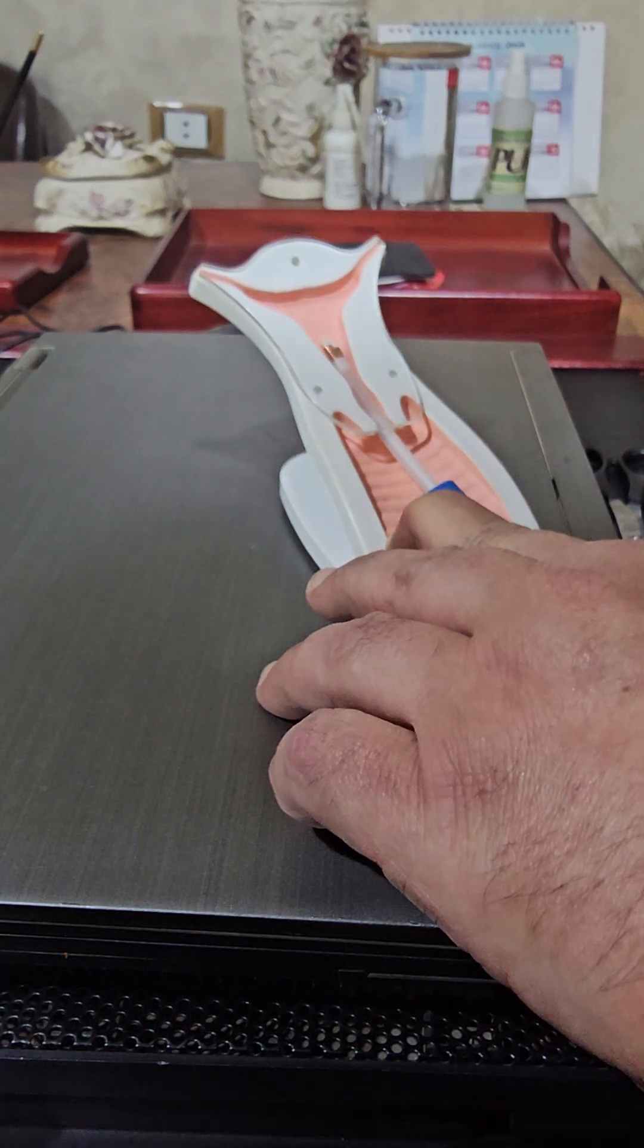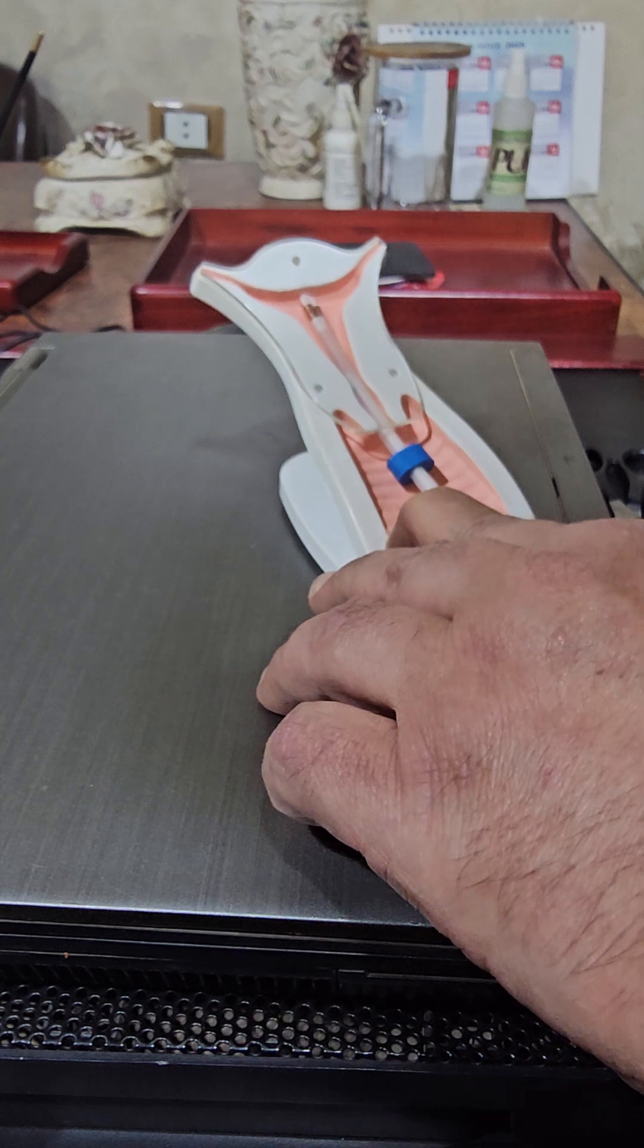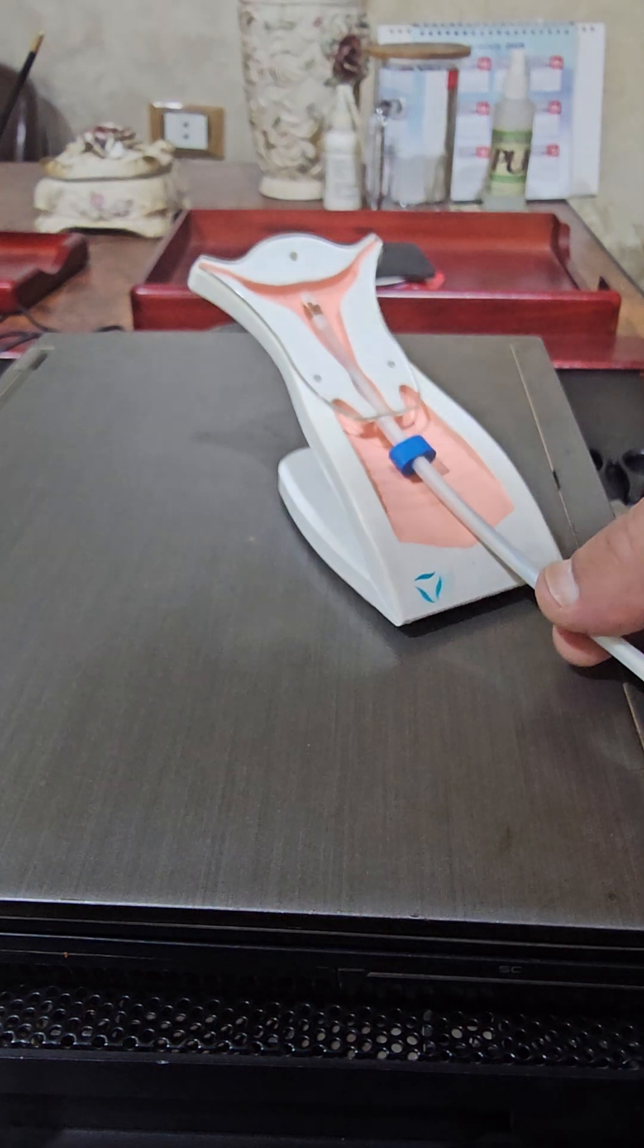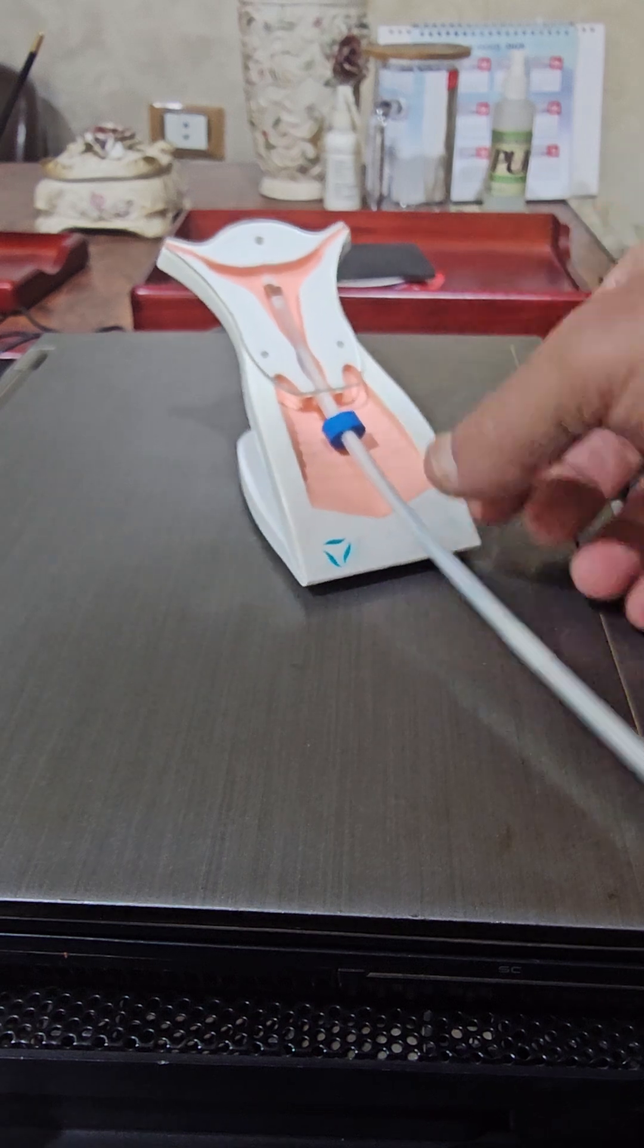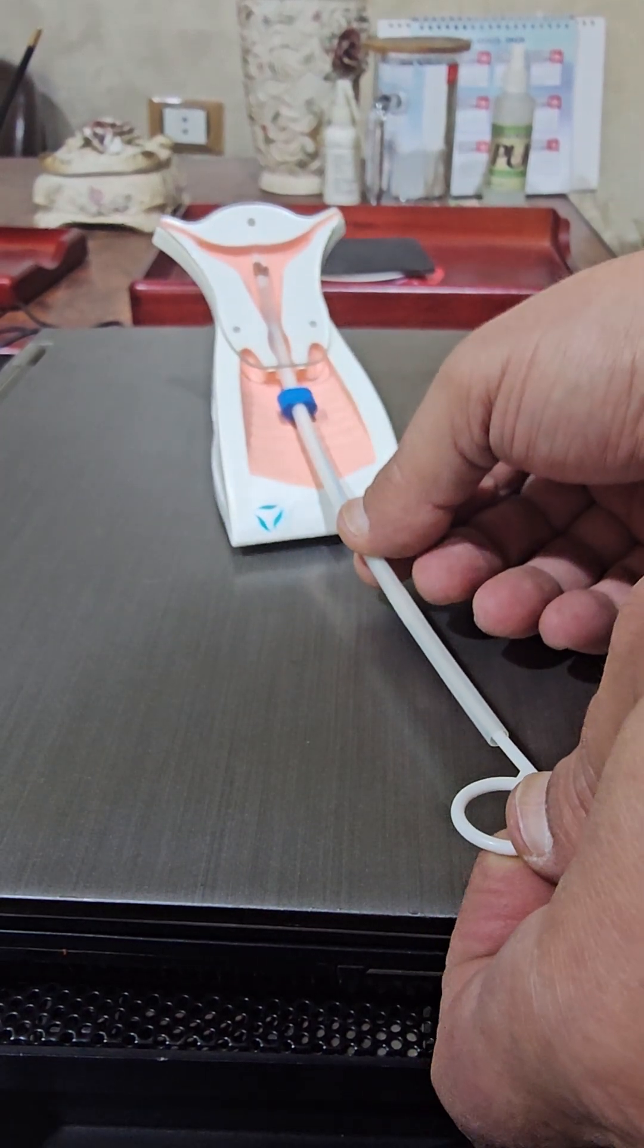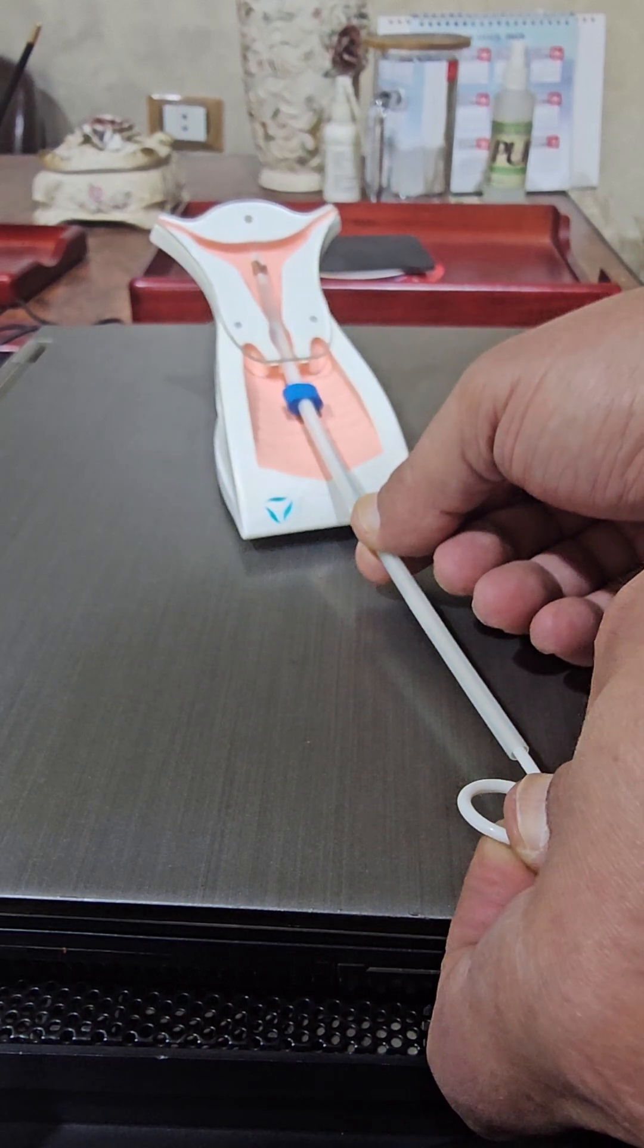First resistance will meet you at the internal os, second resistance is the fundus, then withdraw. Withdraw the inserter while you are holding the plunger like that. I will withdraw the inserter like that to release the transverse arm lock.